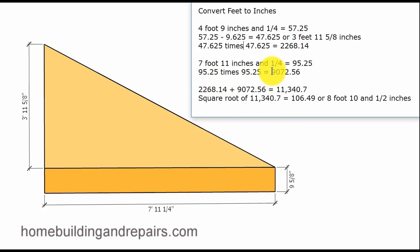That gives us eleven thousand three hundred and forty point seven. We want to take the square root of that eleven thousand three hundred and forty point seven. The square root of this number is one hundred and six point four nine or eight foot ten and a half inches which is what this length is going to be right here.